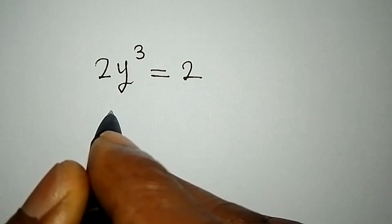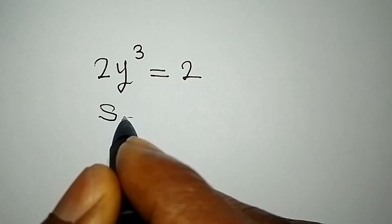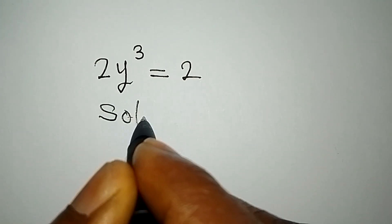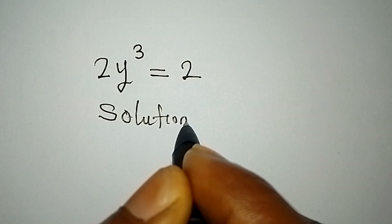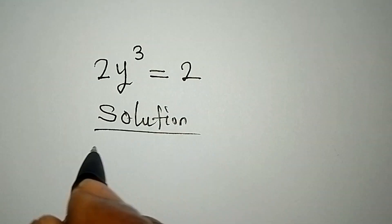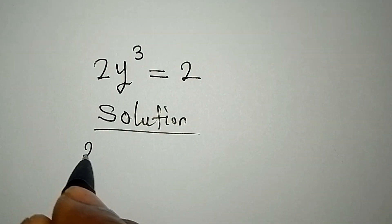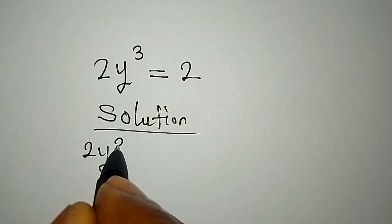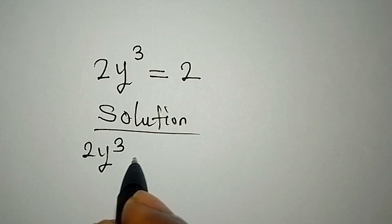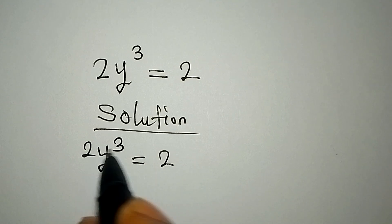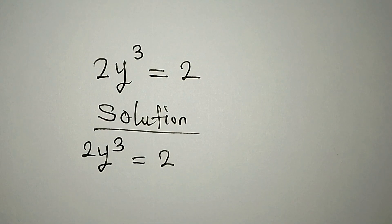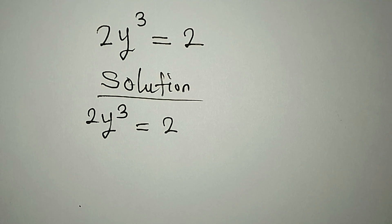Hello, everyone. Let's provide the solution to this problem: 2y to the power of 3 equals 2. We are to find the three solutions.